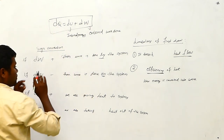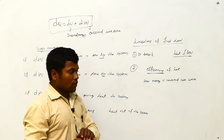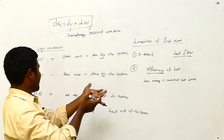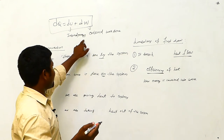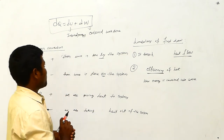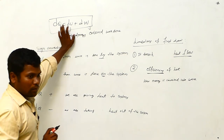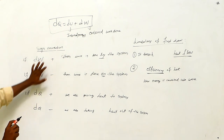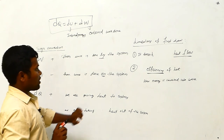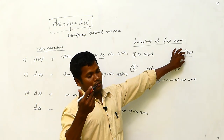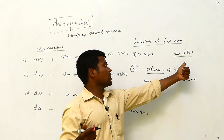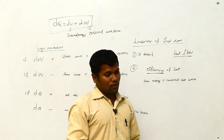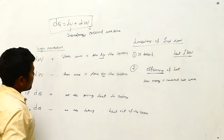For a four-mark exam question on the first law, first write the definition — when you supply energy to a system, some goes into internal energy and some into external work done, and this is the first law. Write the mathematical form: dQ equals dU plus dW. Then write the sign conventions for dW and dQ. Finally, write the three limitations: it cannot explain heat flow, efficiency, or how energy is converted into work.